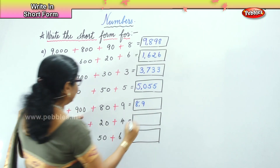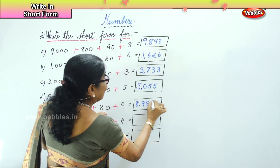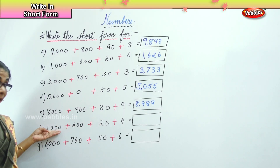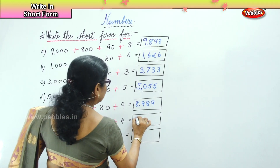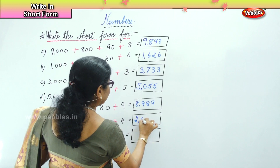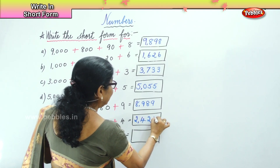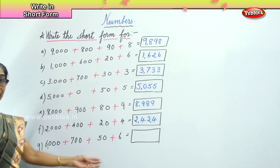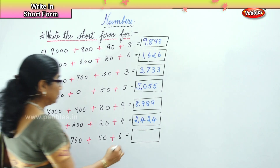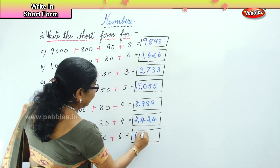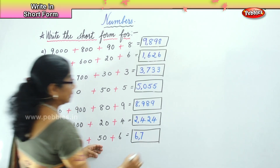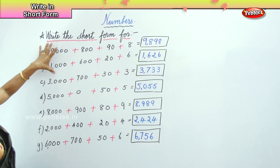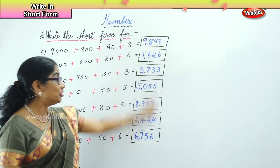Then eight thousand nine hundred and eighty-nine. Then two thousand four hundred and twenty-four. And six thousand seven hundred and fifty-six. That's it — we learned to write the expanded form into the short form.